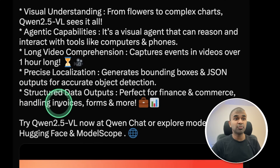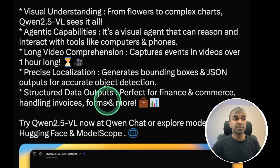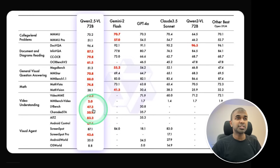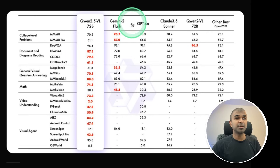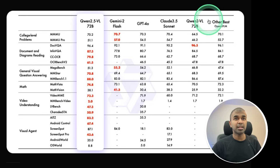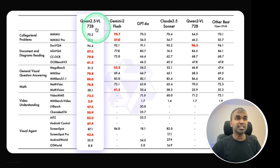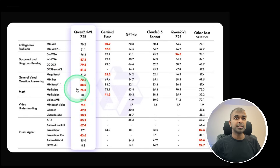Here is a comparison with Gemini 2 Flash, GPT-4o, Claude 3.5 Sonnet, and other models — you can see this model is on par with the others, though it is slightly lower than Qwen 2.5 Max.